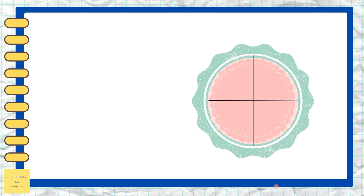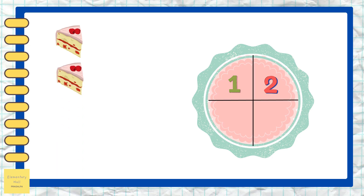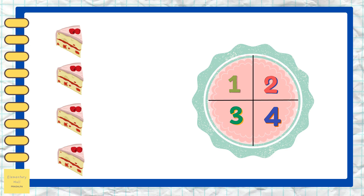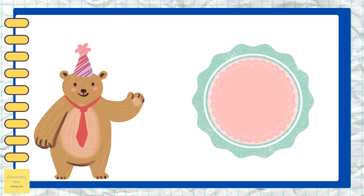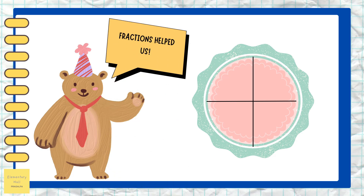Now we cut the cake in the center horizontally, like a sleeping line. Now you can see we have one slice, second, third, and fourth — four equal sizes of cake! That's great. Now they all have one equal slice of cake each.